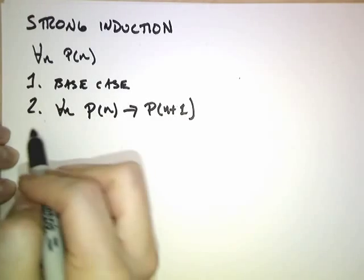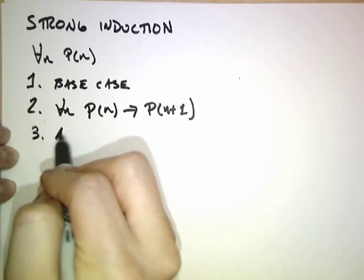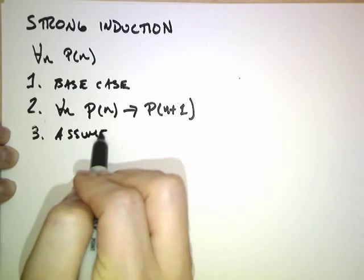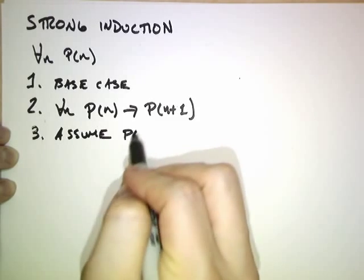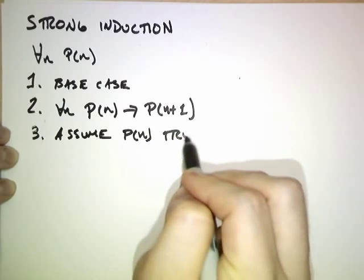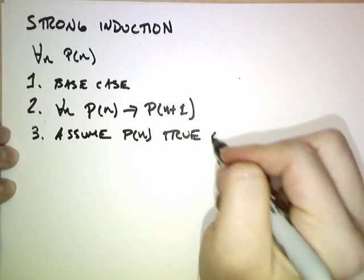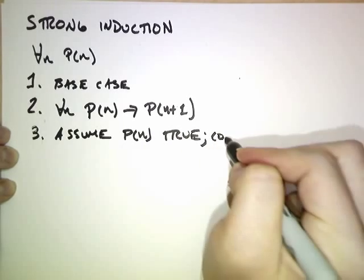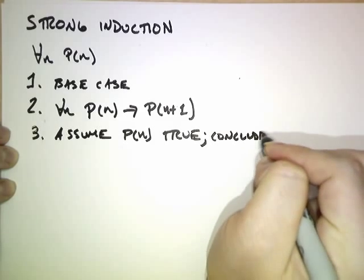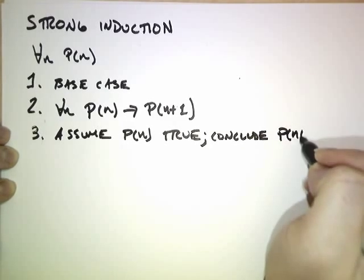Usually, the first step of the inductive proof is to assume p of n is true, and then conclude p of n plus 1 is true.